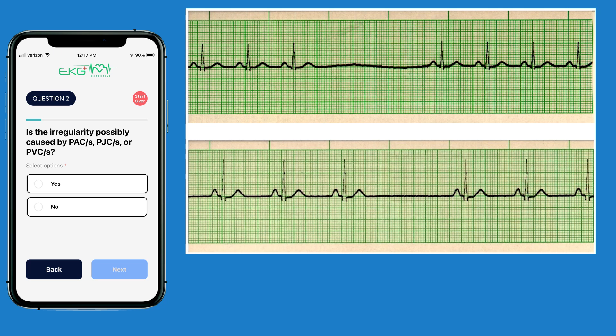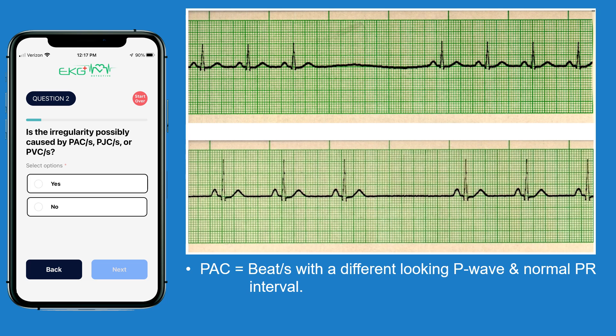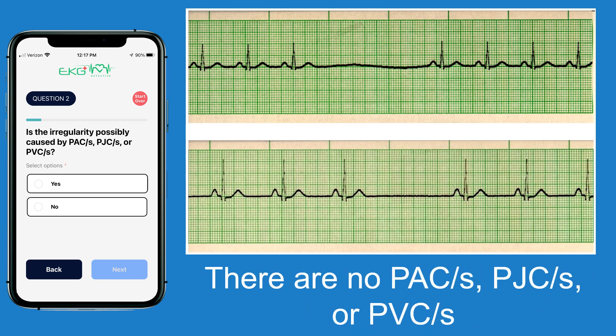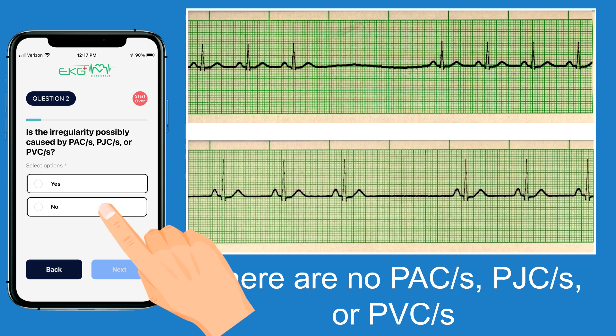Question two asks if the irregularity is possibly caused by PACs, PJCs, or PVCs. A PAC will have a different looking P wave from the underlying rhythm, but the PR interval will be normal between 0.12 to 0.20 seconds. A PJC will either be missing P waves, or if there is a P wave in front of the QRS, it will be inverted and retrograde with a PR interval less than 0.12 seconds. A PVC will have a totally different looking QRS complex compared to the underlying rhythm. Applying these criteria, it doesn't appear we have PACs, PJCs, or PVCs, so we select no and hit next.